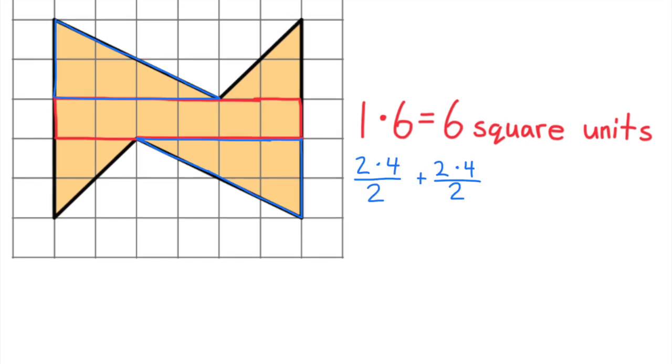Highlighted in blue, you can see two triangles with a base of 4 and a height of 2. Together, these two triangles have an area of 8 square units.